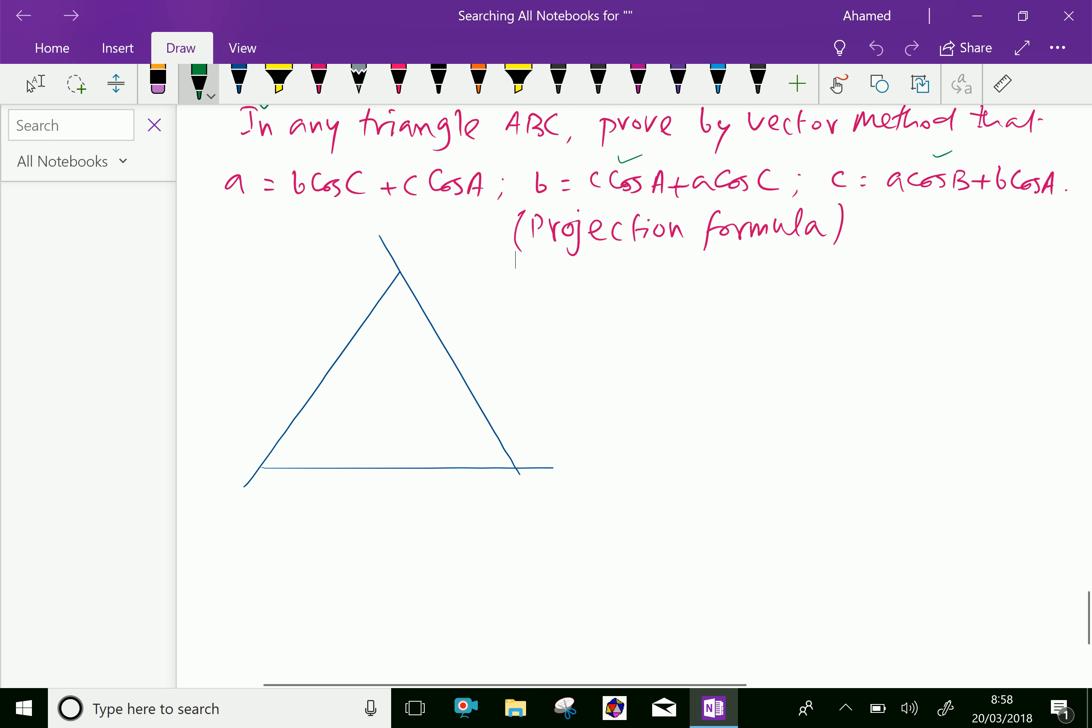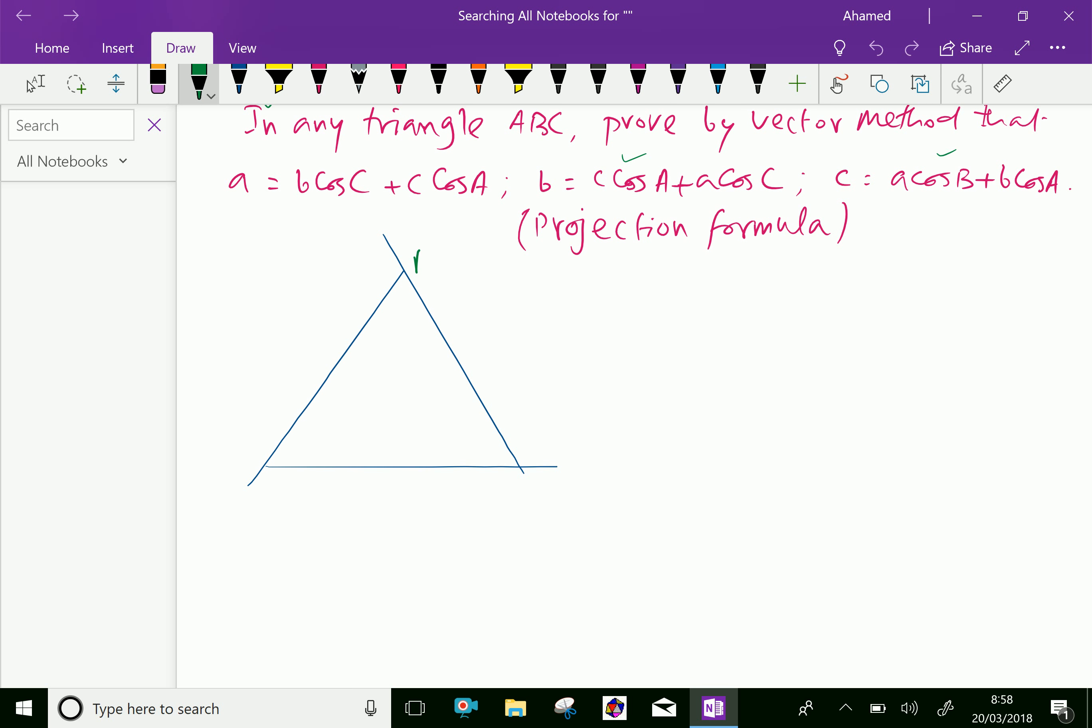Now look at this, we have here the triangle A, B, C. Here this angle is π minus A, here this is π minus B, this π minus C.